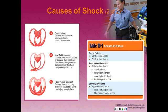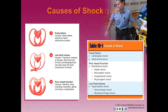Regarding pump failure, some of the causes of failure of the cardiac pump include heart attack, trauma to the heart, or obstructive causes — leading to cardiogenic or obstructive shock. For low fluid volume, causes include trauma to vessels or tissues and fluid loss from the GI tract through vomiting or diarrhea, resulting in hemorrhagic and non-hemorrhagic shock. For poor vessel function, causes include infection, narcotic drug overdoses, spinal cord injury, and anaphylaxis — producing distributive shock, which includes septic, neurogenic, anaphylactic, and psychogenic shock.